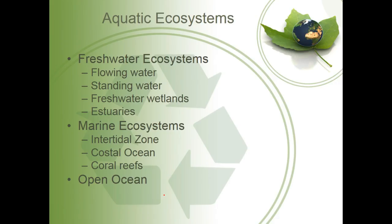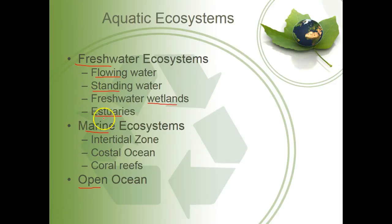Aquatic ecosystems are the ecosystems that are underwater or that include water. It can be freshwater or marine ecosystems. Within marine ecosystems, it can also be open ocean — your deep open ocean, which can be a mile deep at some points. Freshwater ecosystems can be flowing water, standing water, wetlands — basically like a flooded field — and estuaries, where freshwater and saltwater come together. Marine ecosystems can be the intertidal zone between low and high tide, coastal ocean, and coral reefs, which are often submerged off the coast of particular continents and can be very shallow due to the large coral.